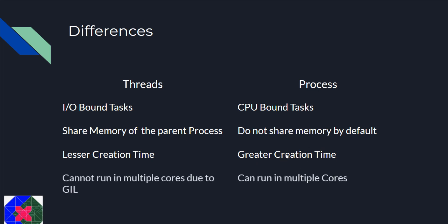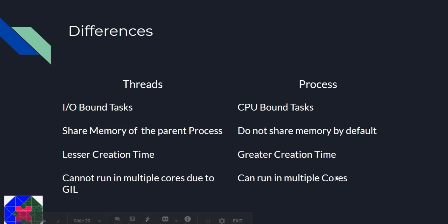The next and the last point is specific to Python. Threads cannot run on multiple cores due to the Global Interpreter Lock in Python, which is abbreviated as GIL, but processes can run on multiple cores because there is only one GIL per process. The reason threads cannot run on multiple cores is because of the GIL provided by their parent process, so that GIL prevents them from being run on different cores.